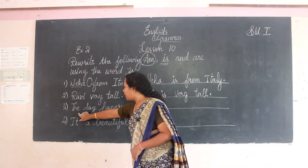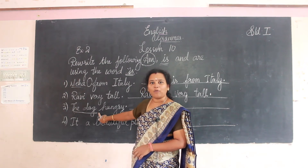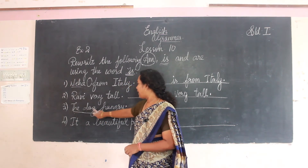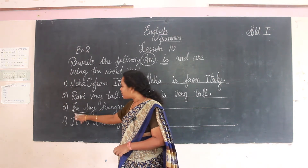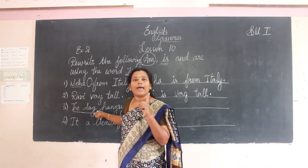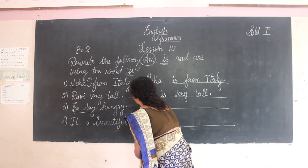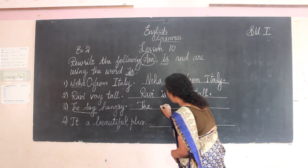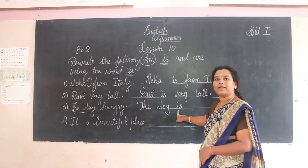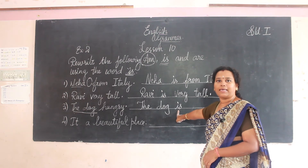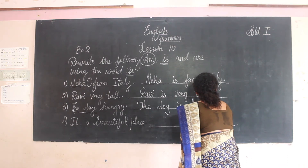See the third one: 'The dog hungry.' The dog is the naming part and 'hungry' is the telling part. The dog is a single animal, so we add 'is': 'The dog is hungry' — D-O-G is H-U-N-G-R-Y.